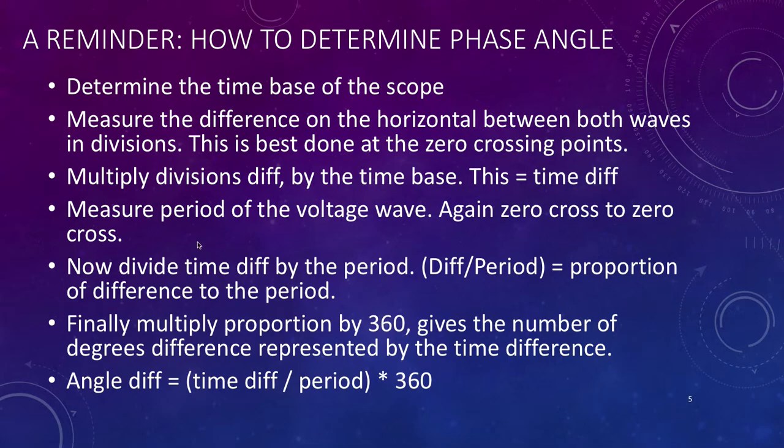Take the number of divisions, multiply it by the time base. Now divide the difference by the period—in other words, the difference in time divided by the period, which is a time, giving us a proportion of the total period. Finally, we multiply all that by 360. This gives us the number of degrees difference represented by the time difference. So the whole formula: the angle difference is simply the time difference divided by the period multiplied by 360 degrees.